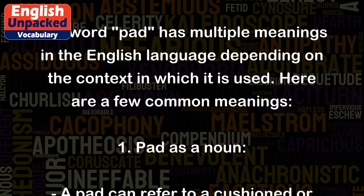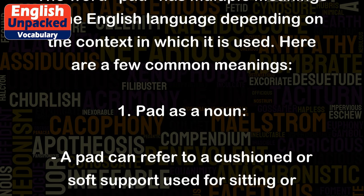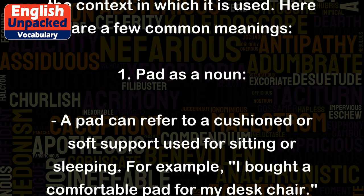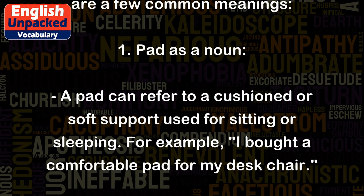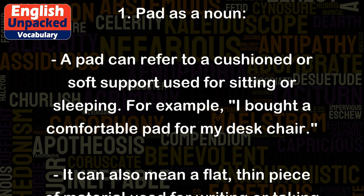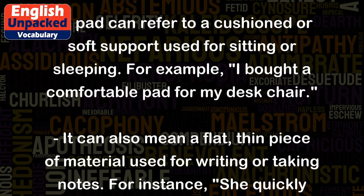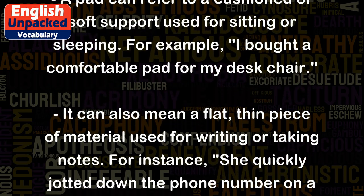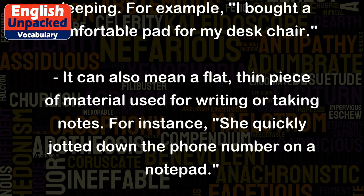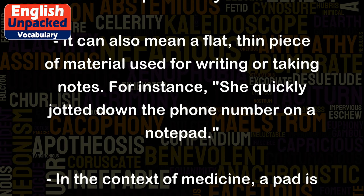1. Pad as a noun. A pad can refer to a cushioned or soft support used for sitting or sleeping. For example, I bought a comfortable pad for my desk chair. It can also mean a flat, thin piece of material used for writing or taking notes. For instance, she quickly jotted down the phone number on a notepad.